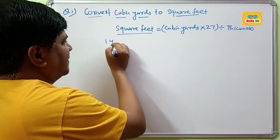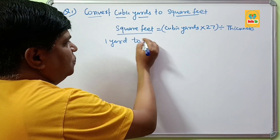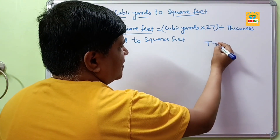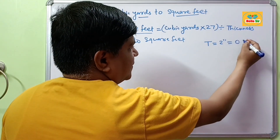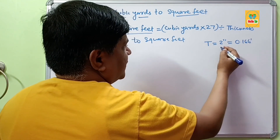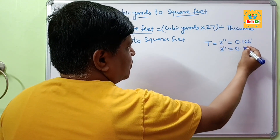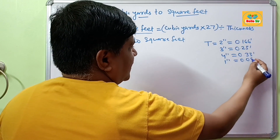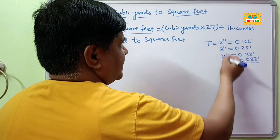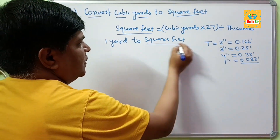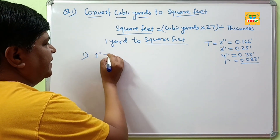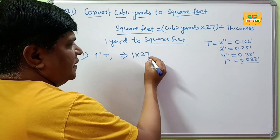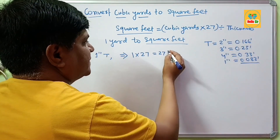Suppose you have 1 cubic yard to convert to square feet. There may be different thicknesses for your project, such as 2 inches, which equals 0.166 feet; 3 inches equals 0.25 feet; 4 inches equals 0.33 feet; and 1 inch equals 0.0833 feet. So: 1 cubic yard multiplied by 27 equals 27, divided by the thickness in feet.